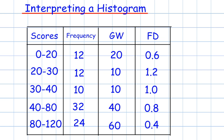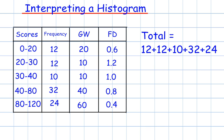So this is how we complete the chart. The next question might be how many people were surveyed altogether. To find the total number of people we need to add up the frequency column, which when added together equals 90 people.